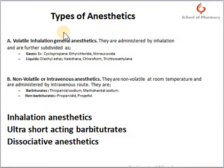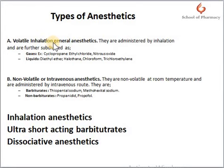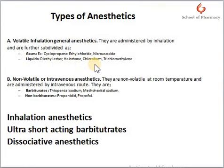What is the general classification of anesthetics? These anesthetics are classified according to their nature — that is, volatile or non-volatile at room temperature. Volatile inhalation general anesthetics are administered by inhalation and are further subdivided into gas and liquid forms, such as diethyl ether, halothane, and chloroform. Non-volatile or intravenous anesthetics are non-volatile at room temperature and are administered intravenously, such as barbiturates and non-barbiturates.